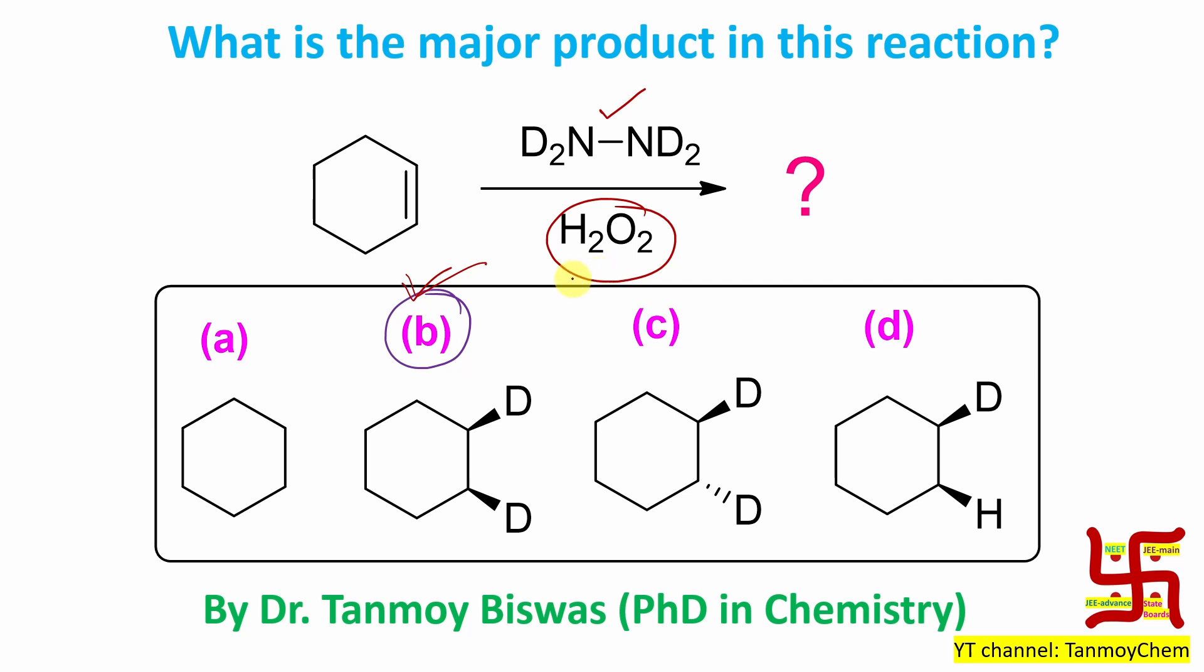Otherwise if you do not know anything it is very difficult to predict. And if they twist the options then it will be even more complicated.